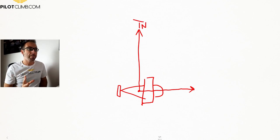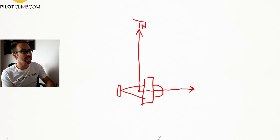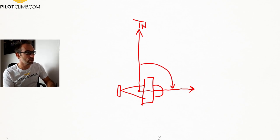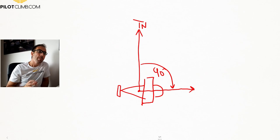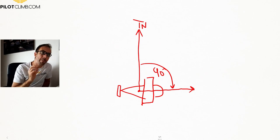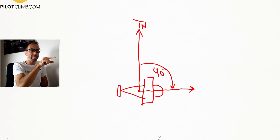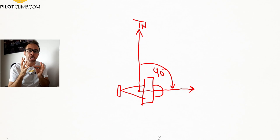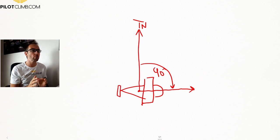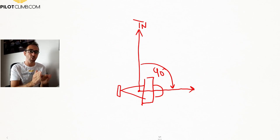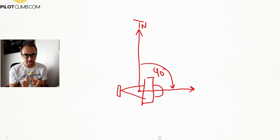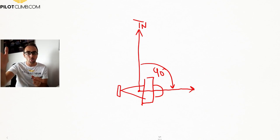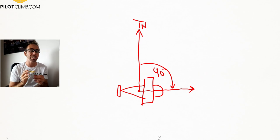As you can see in the picture, the difference between the true north and the aircraft's nose direction is 90 degrees in this case. However, this is not what the pilot will read inside the cockpit looking at the compass, because the compass on board takes the compass north as its reference.